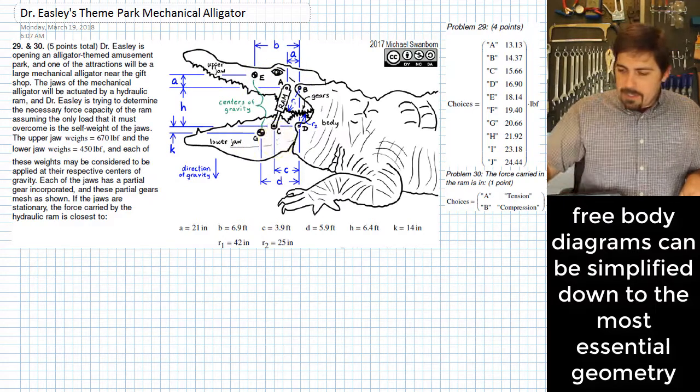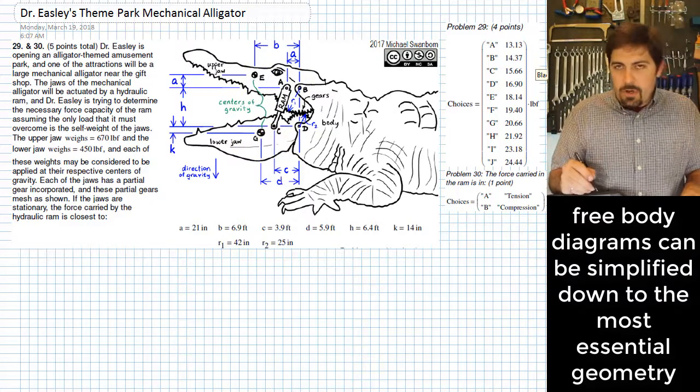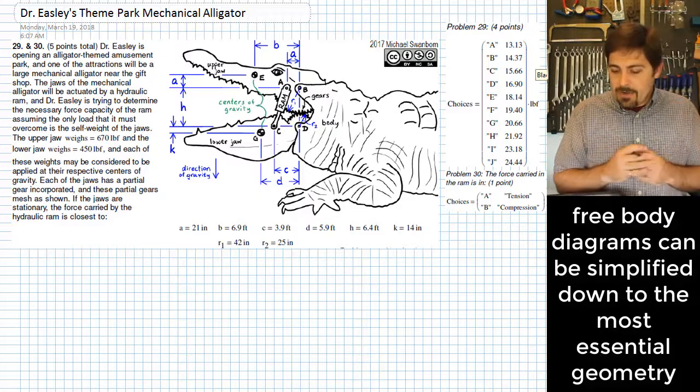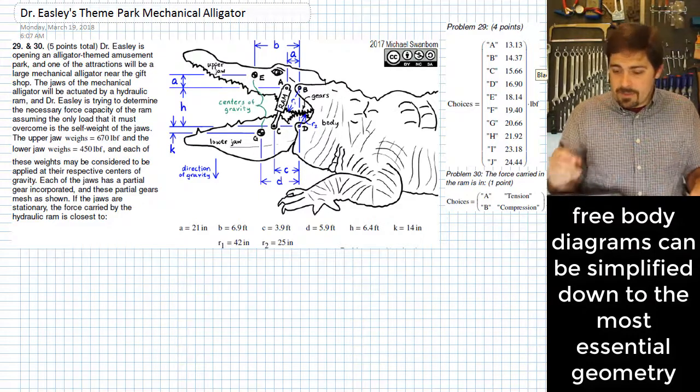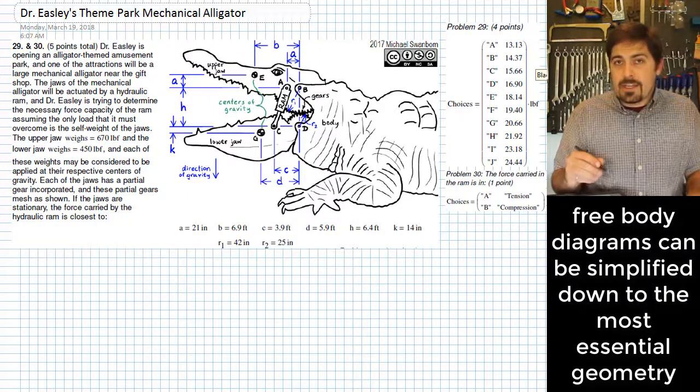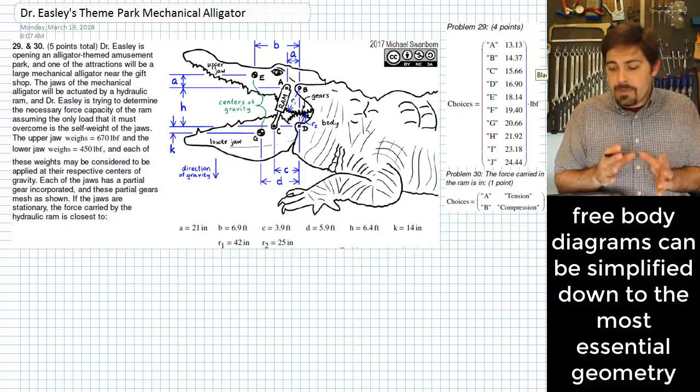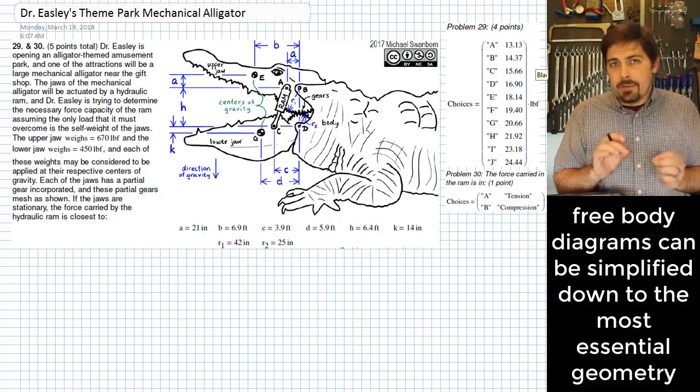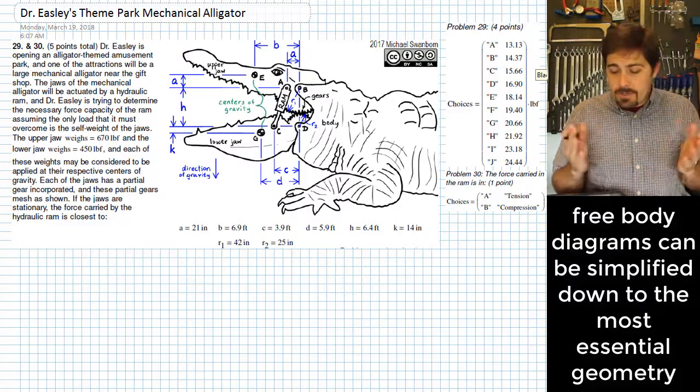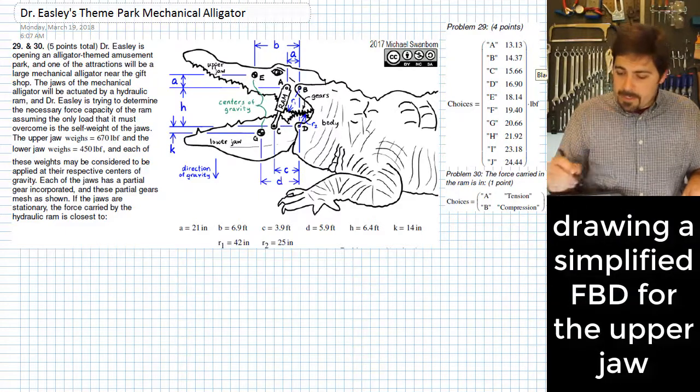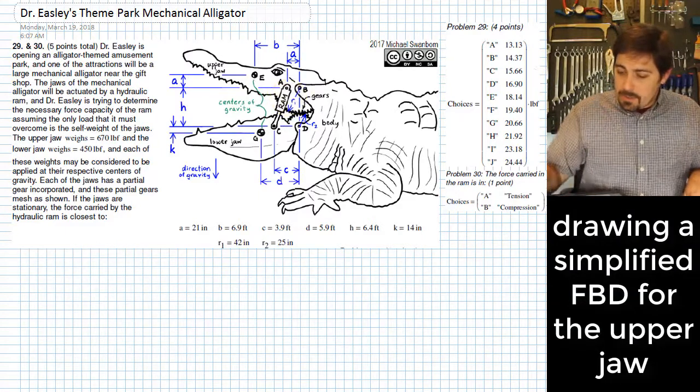One thing that actually helps out a lot is you don't always have to draw your free body diagrams with all the level of detail and complexity that looks like the picture is. It's okay as long as you get all of the points of interest in the correct location relative to the other ones. It's okay for you to simplify it a little bit. That's what I'm going to do here with this problem.